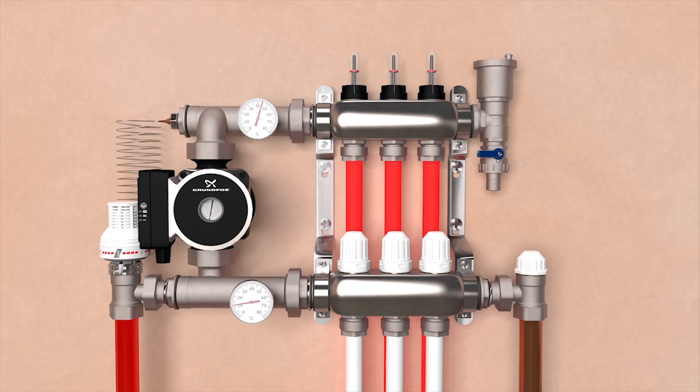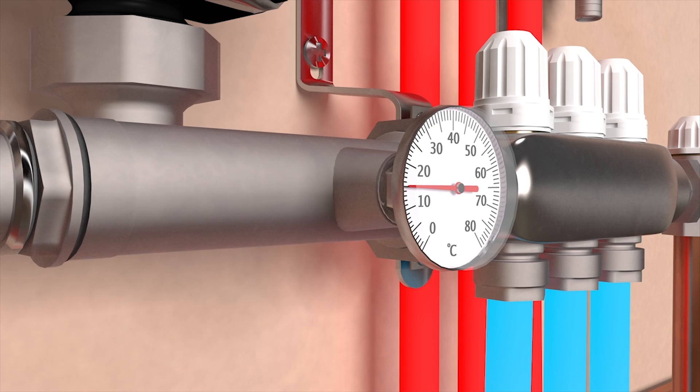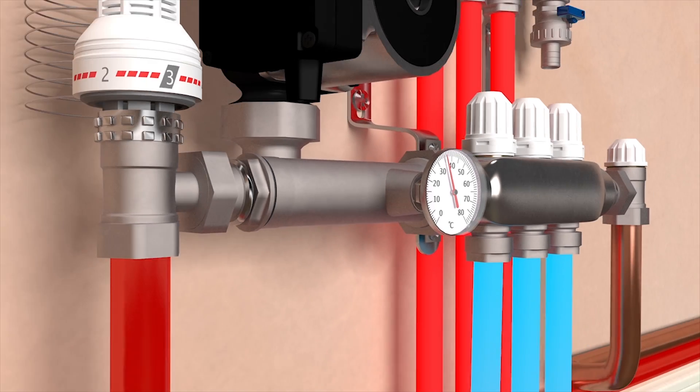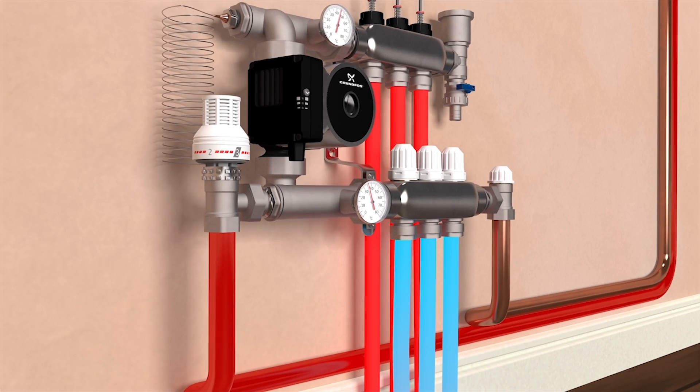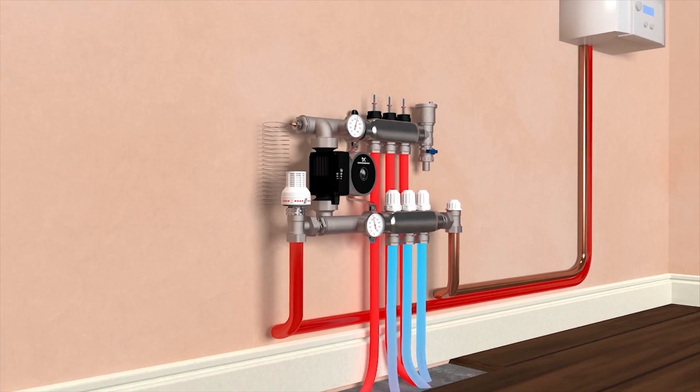Water returns to the manifold from the floor loops into the bottom return bar. The thermometer on this bar will give you an accurate reading of the water returning to your manifold. This is generally some 10 degrees less due to the heat being transferred from the pipes and radiated into your rooms.